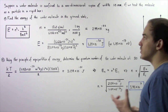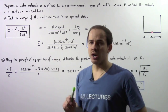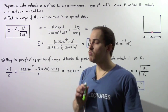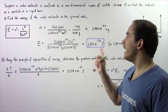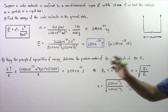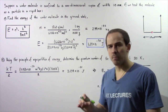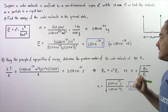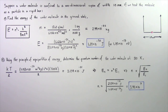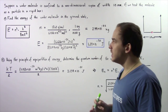If we treat the water molecule as a particle inside a rigid box, in part A we want to find the energy of the molecule when it is in the ground state. And in part B, using the principle of equal partition of energy, we want to determine the quantum number of the water molecule at a temperature of 310 Kelvin.